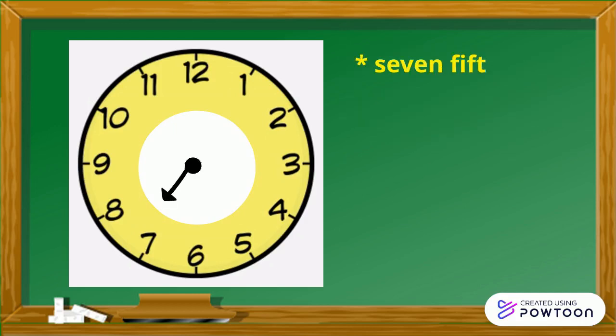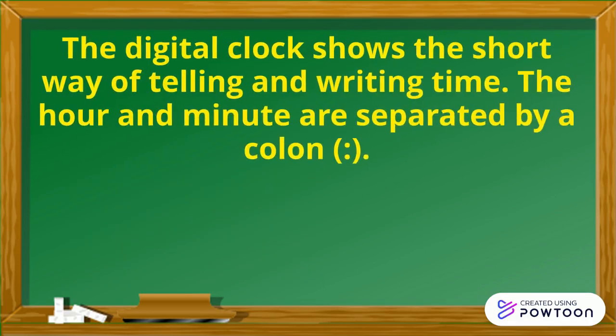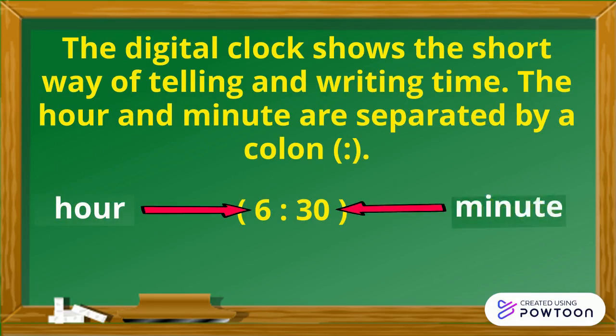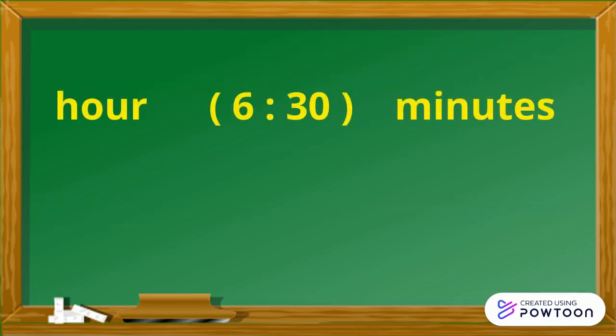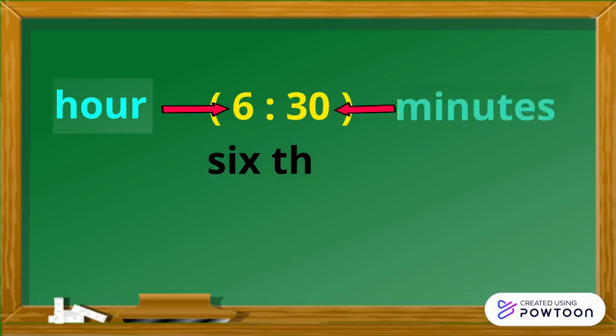Seven fifteen. The minutes are separated by a colon. Read first the hour, then the minutes. We read it as 6:30. Six thirty. So, that is how we tell and write time correctly.